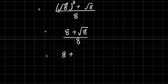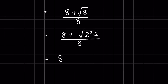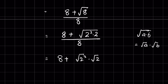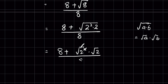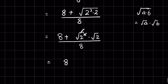Now, 8 plus square root of 8 — we can write square root of 8 as square root of (2 squared times 2). When a squared term is under the square root, we can remove the square — giving us 2 times square root of 2. So the expression becomes 8 plus 2 times square root of 2, upon 8.